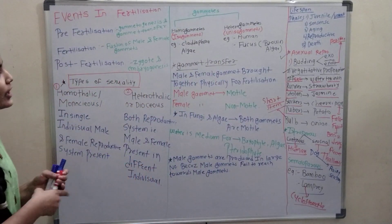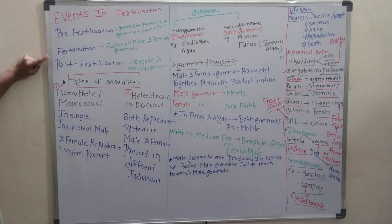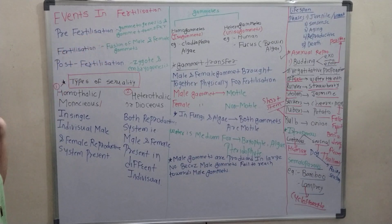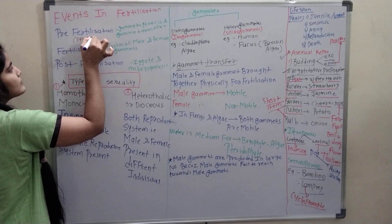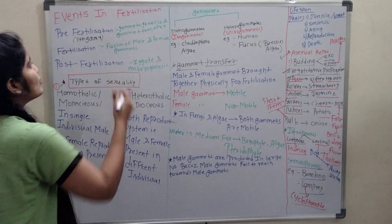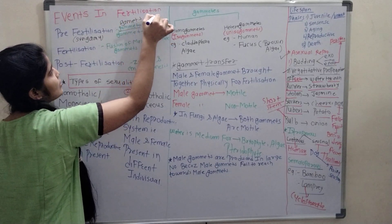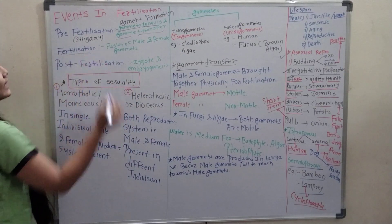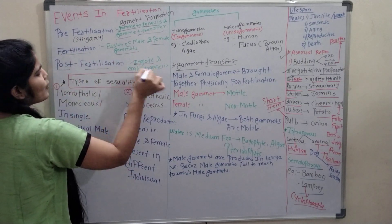Today we are going to learn events in fertilization. There are pre-fertilization, fertilization and post-fertilization events. In my previous lecture, I told that fertilization is also known as syngamy. What are the events in pre-fertilization? Gametogenesis and gamete transfer. Gameto means gametes and genesis means formation. Gamete transfer means transfer of the gamete. Then fertilization - fusion of male and female gametes. Then post-fertilization: zygote formation and embryogenesis.